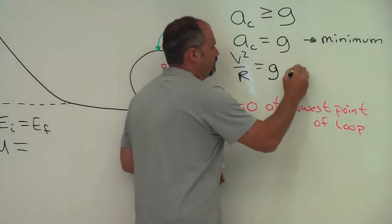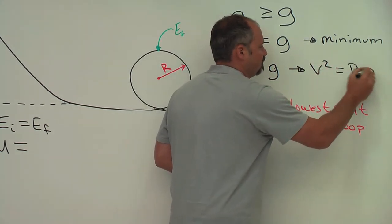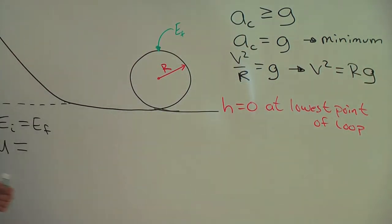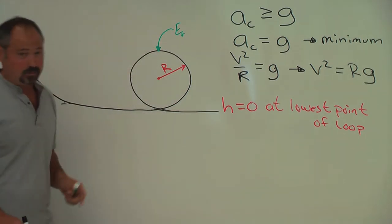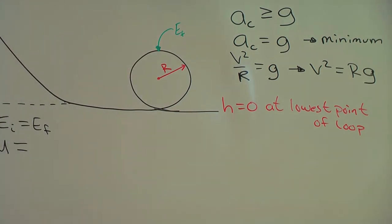And we can then solve for v², it must be the radius of the loop multiplied by the acceleration of gravity. That's the minimum speed the ball must have at the top in order to make the loop.